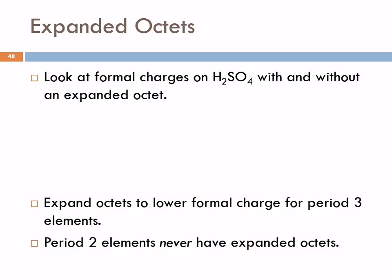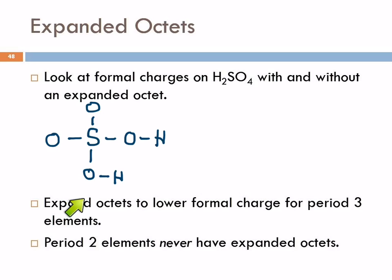Let's look at sulfuric acid and look at formal charges with and without an expanded octet — we can draw this one either way. What we'll find is that the formal charges tell us to expand the octet. I'm going to put sulfur in the middle, put the oxygens around it, and put hydrogen here and a hydrogen here. Total valence electrons: two from the hydrogens, six from the sulfur, and four times six from the oxygens — that's 24 — giving us 32 total.